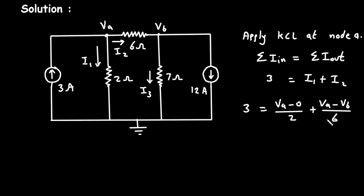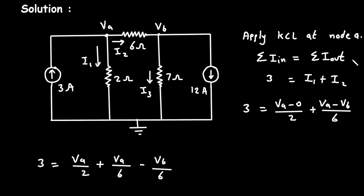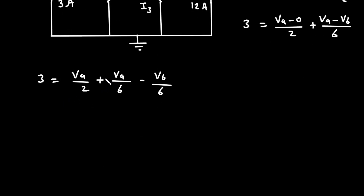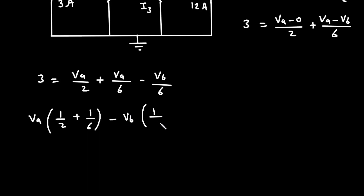Now let's simplify this. So it will be: 3 is equal to VA upon 2, then plus VA upon 6, minus VB upon 6. Now here we can take VA common, so VA bracket 1 upon 2 plus 1 upon 6, then plus VB with minus 1 upon 6 inside the bracket, is equal to 3.